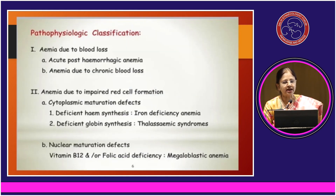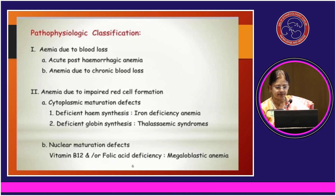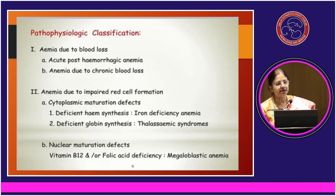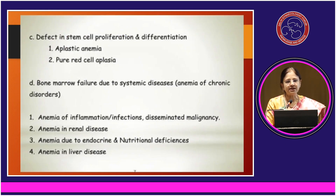Now going to the pathophysiological classification of anemia. Anemia could be due to blood loss — acute, due to road traffic accidents, or more commonly obstetric causes like PPH — or chronic blood loss like AUB, hemorrhoids, and GI bleeds. It could also be due to impaired red cell formation: a problem in the cytoplasm involving deficient heme synthesis due to iron deficiency, or deficient globin synthesis in the thalassemic syndromes, or nuclear maturation defects due to vitamin B12 or folic acid deficiency — the megaloblastic anemias.